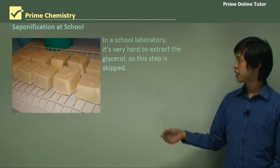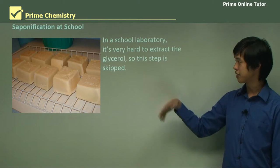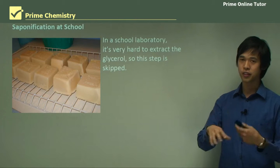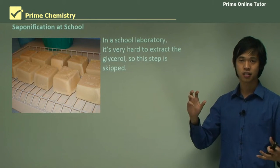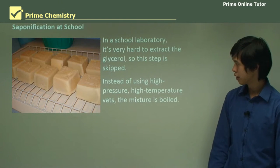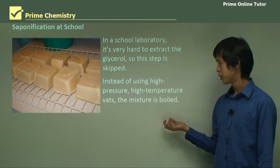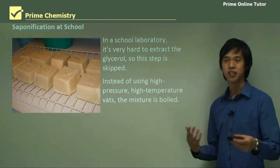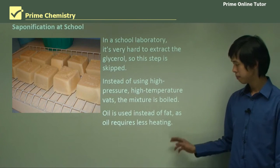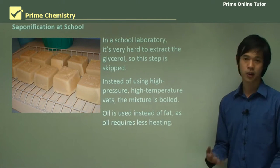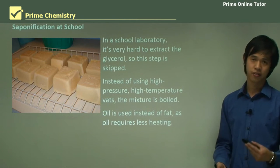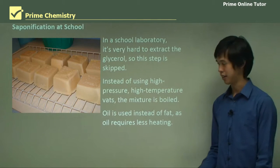When doing this in school, it's very hard to extract the glycerol, so we just skip that step, because glycerol bonds very strongly to water, making it a very difficult process to remove. Instead of using high pressure and high temperature vats, the mixture is just boiled. Also, oil is used instead of fat because it requires less heating — fats require many bonds to break, whereas oils have double and triple bonds which are easier to break.